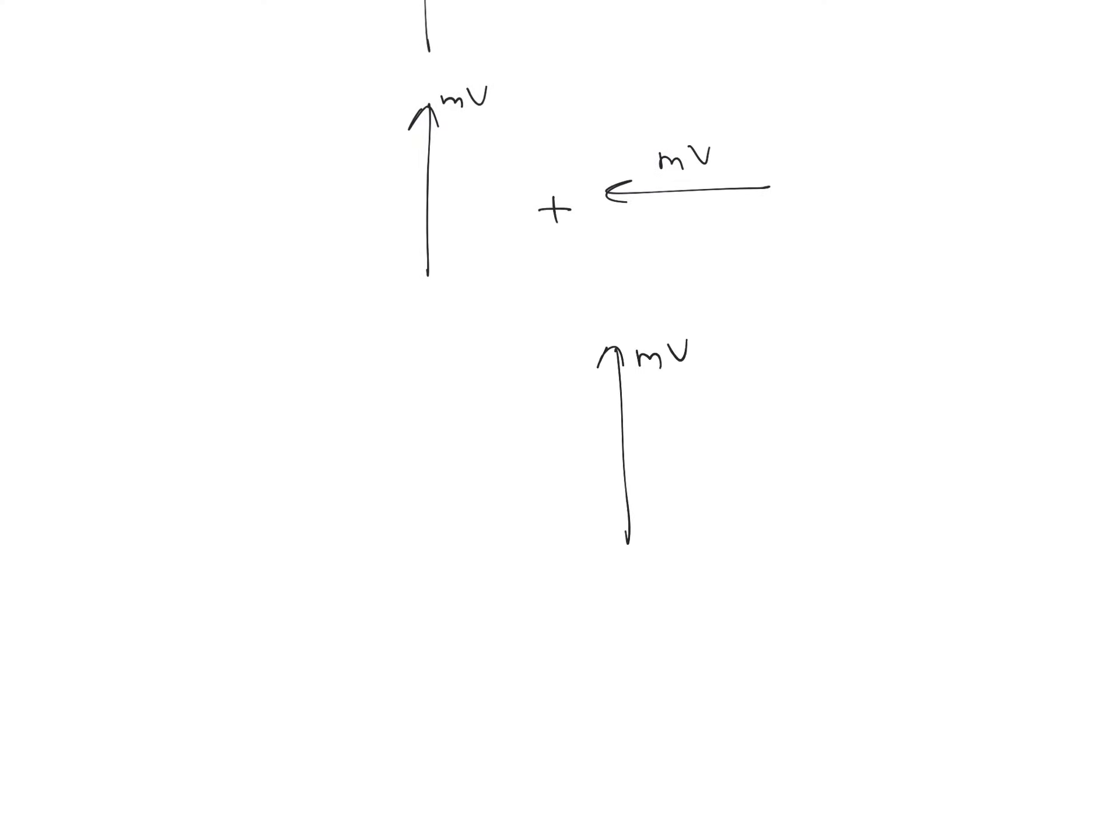If you are adding these two, this is final momentum mV and this is minus initial momentum mV. So this is going to give the resultant change in momentum. As it is 90 degrees, we can write this as root 2 mV.